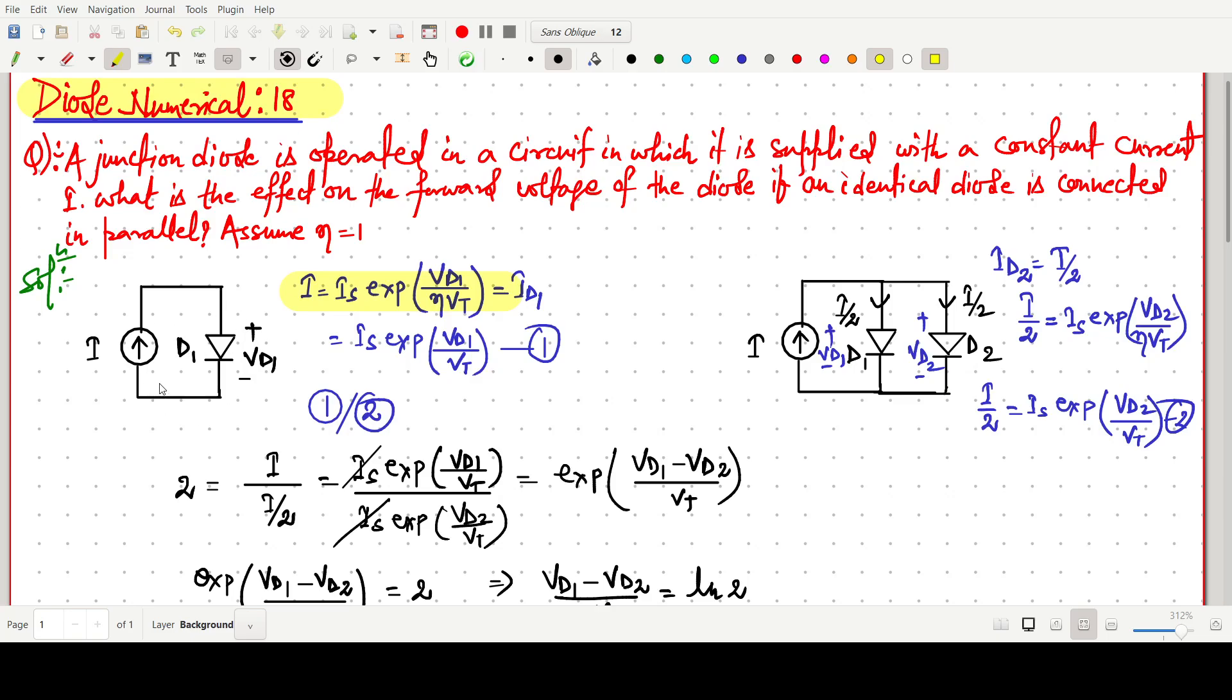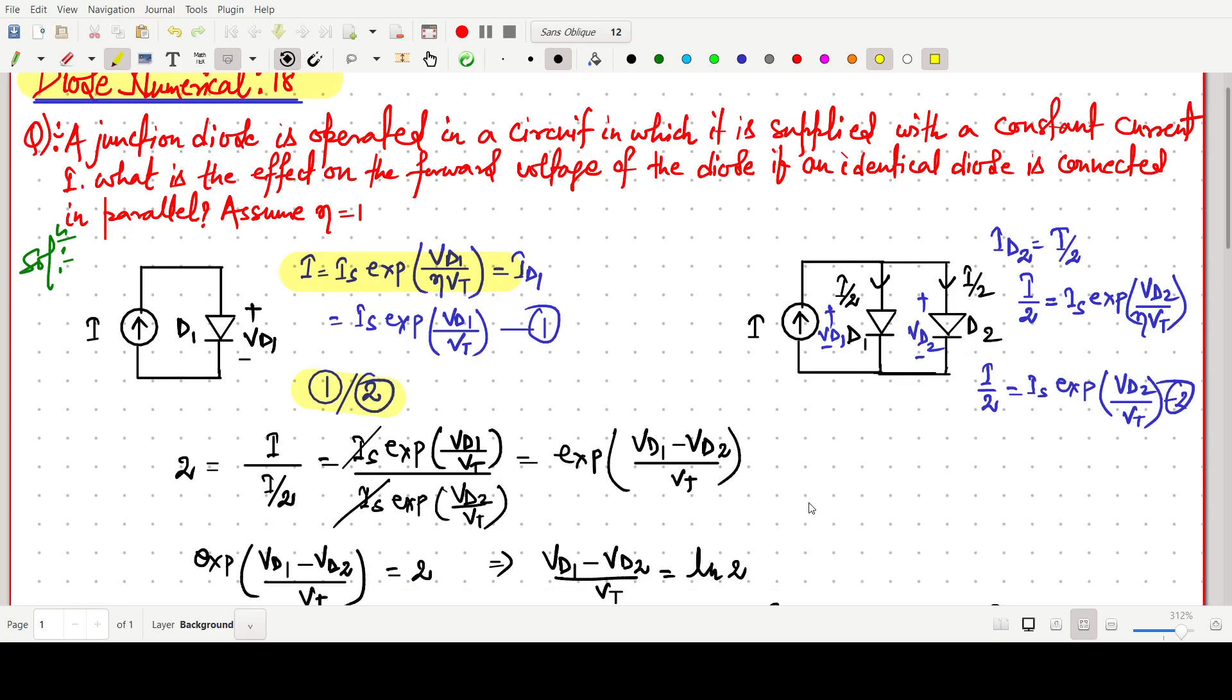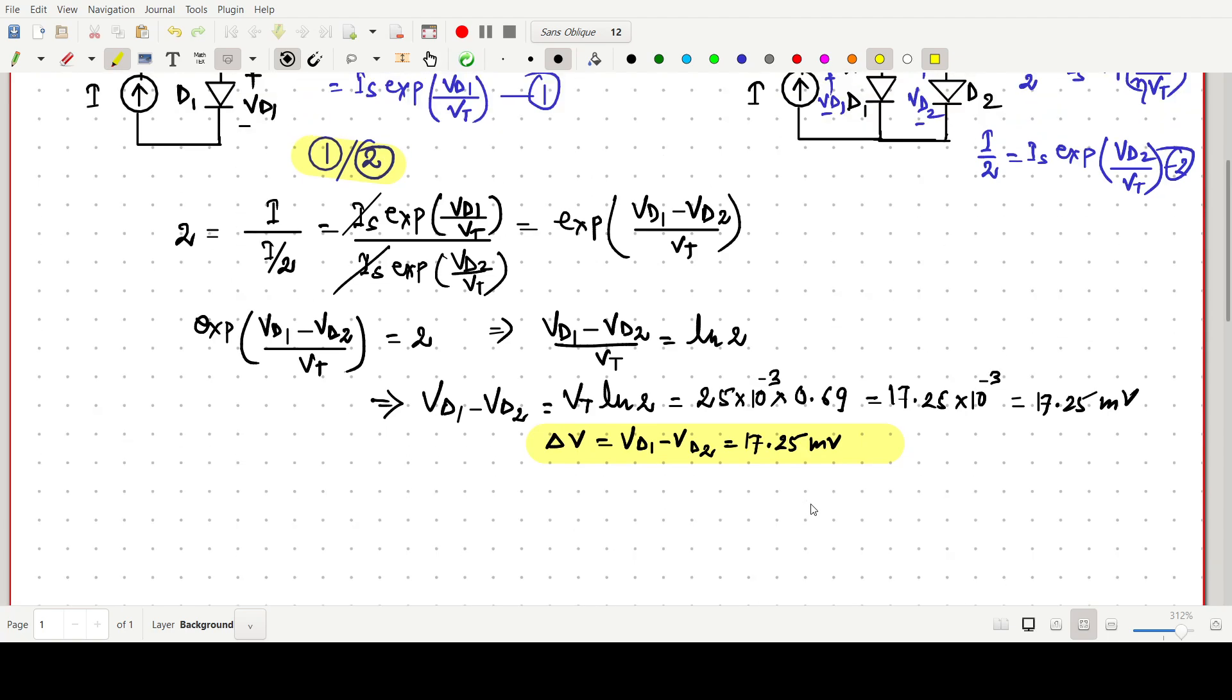We are taking this expression for the easiest way for the solution of this problem. First only one diode is there. We are giving some current through current source I. Then we have to write the expression. Then if some more identical diode is connected in parallel, the current will be I by 2. And if we divide equation 1 by 2, then finally what should be the change in voltage VD1 minus VD2, we can calculate like 17.25 millivolt.